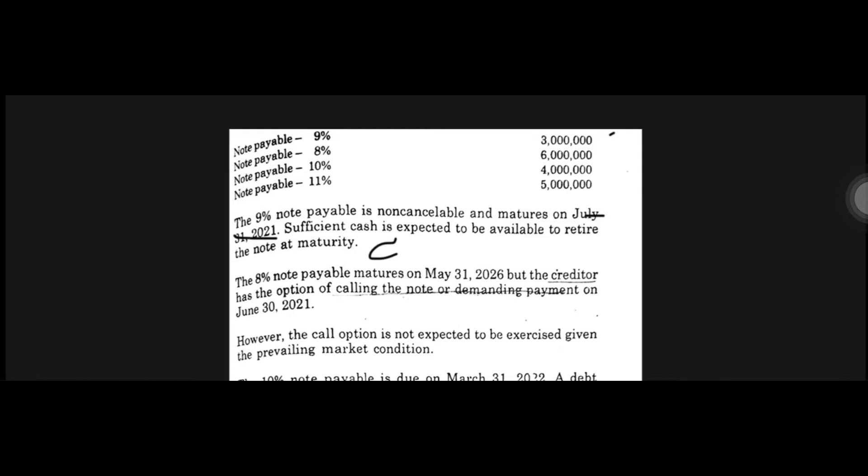Next, we have the second note payable, 8%. It matures on May 31, 2026. You would think that it is long-term or a non-current liability. However, the creditor has the option of calling the note or demanding payment on June 30, 2021. Since it is callable on demand, you can be charged anytime, meaning it is also a current liability.